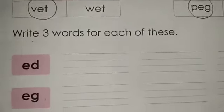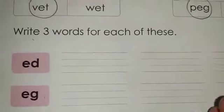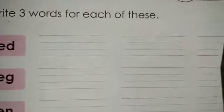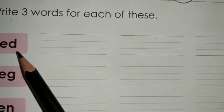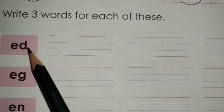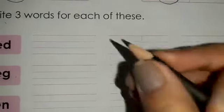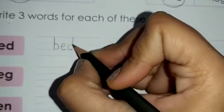Now moving on to the next exercise: write three words for each of these clusters, which we have already studied. Let's begin with the first one — E-D. Tell me three words. The first word is bed, B-E-D, bed.